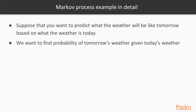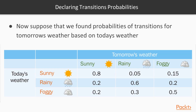Suppose you want to predict what the weather will be tomorrow based on what the weather is today — we want to find the probability of tomorrow's weather given today's weather. Suppose we found transition probabilities: if today is sunny, there is an 80% probability tomorrow will also be sunny, a 5% probability it will be rainy, and a 15% probability it will be foggy. For rainy: rainy-to-sunny is 20%, rainy-to-rainy is 60%, rainy-to-foggy is 11%. If today is foggy, tomorrow will be sunny with 12% probability, rainy with 30%, and foggy with 50%. We can use those transition probabilities to model an HMM.